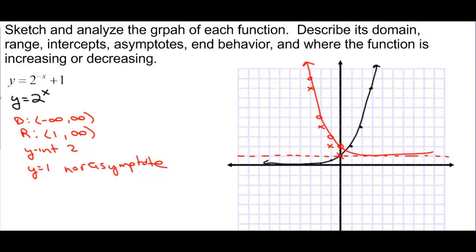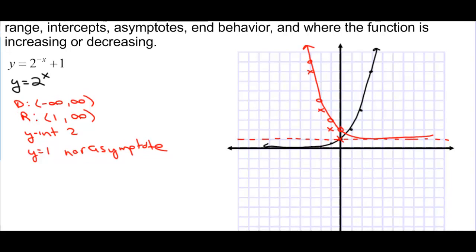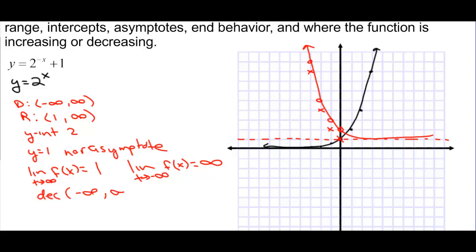For end behavior, looking at left and right: the limit as x approaches infinity of f(x) equals 1, so as we go to the right this function levels off to 1. The limit as x approaches negative infinity shoots up to infinity. This function is decreasing on its entire domain, which is negative infinity to infinity.